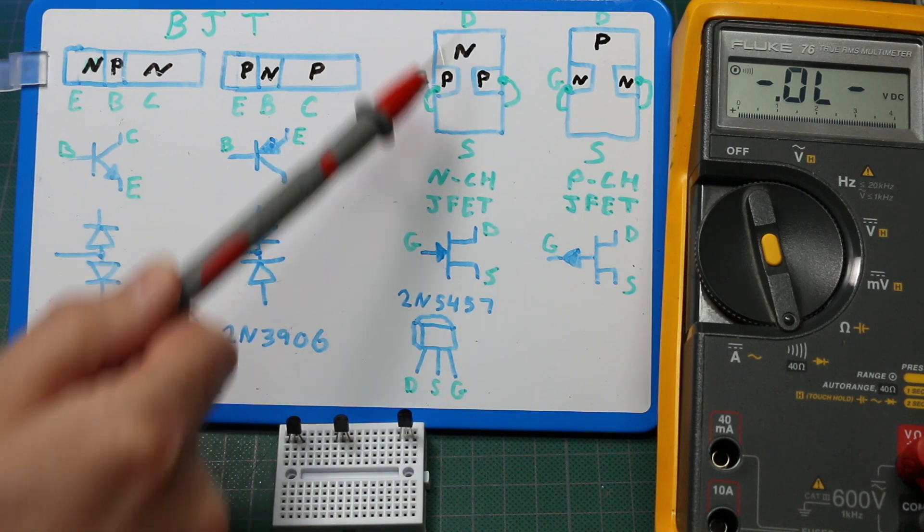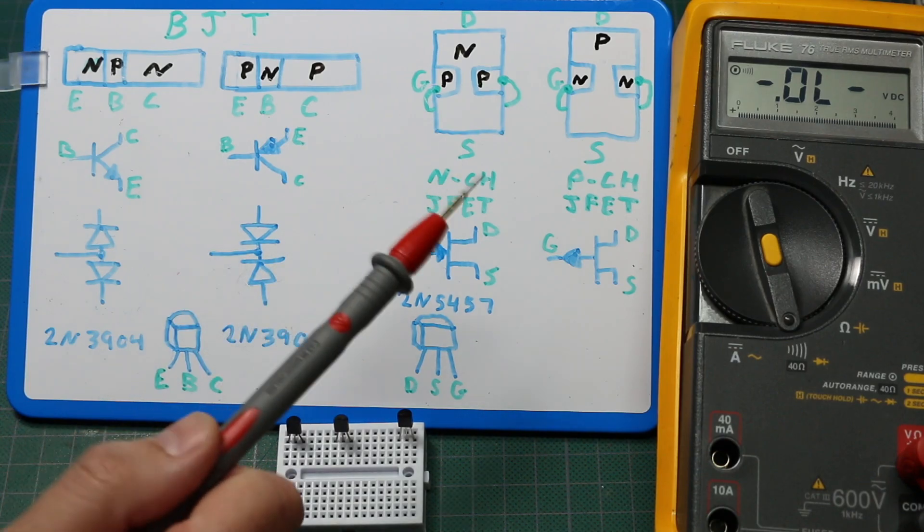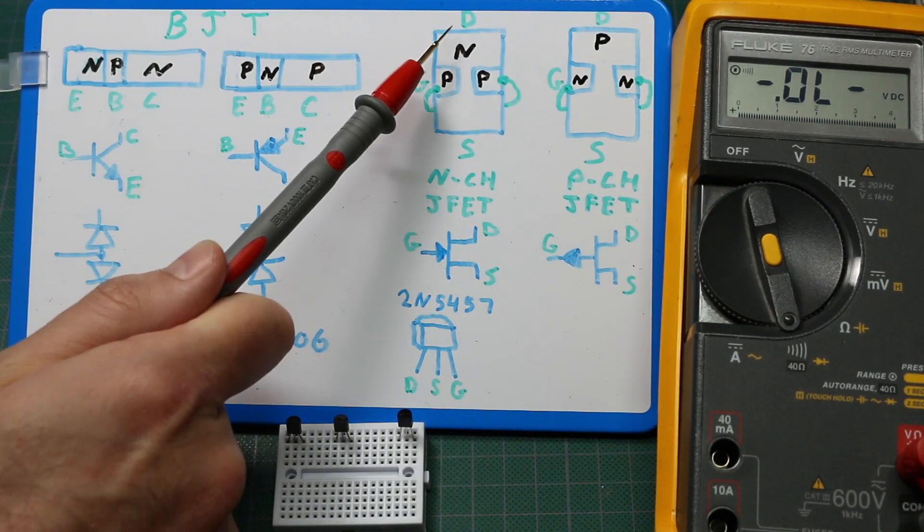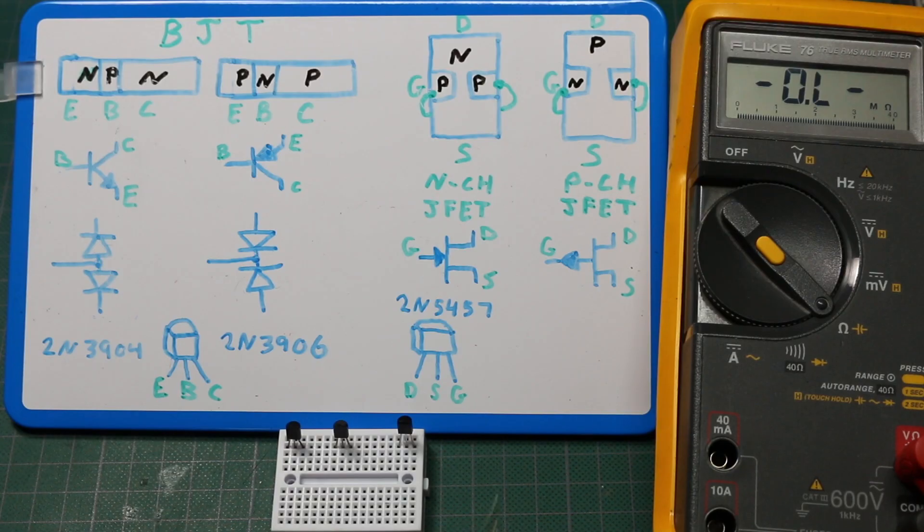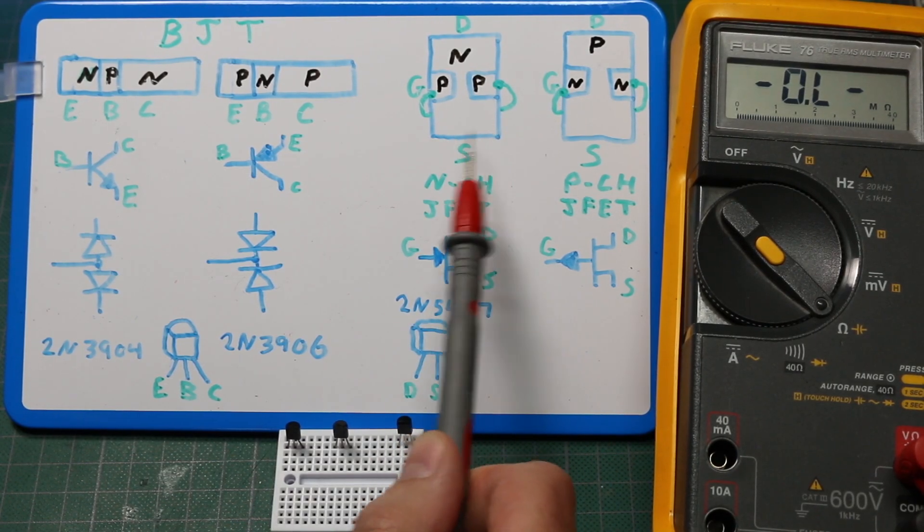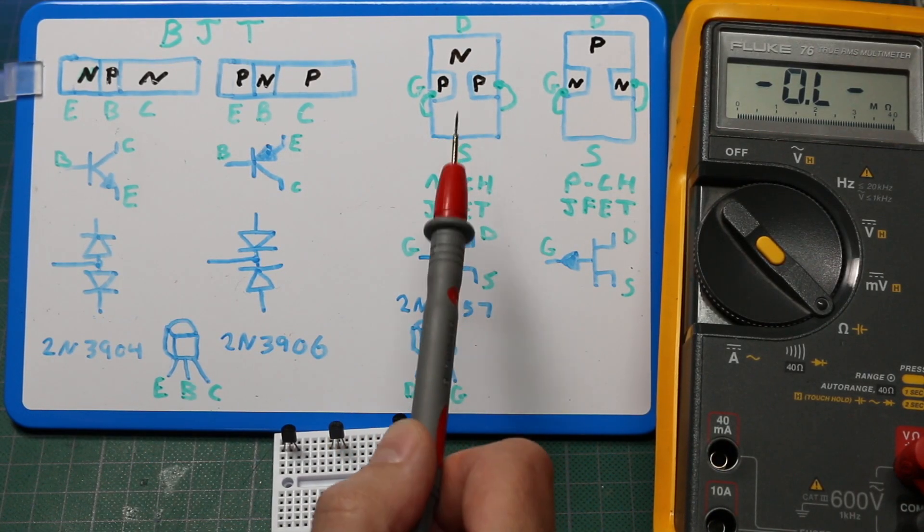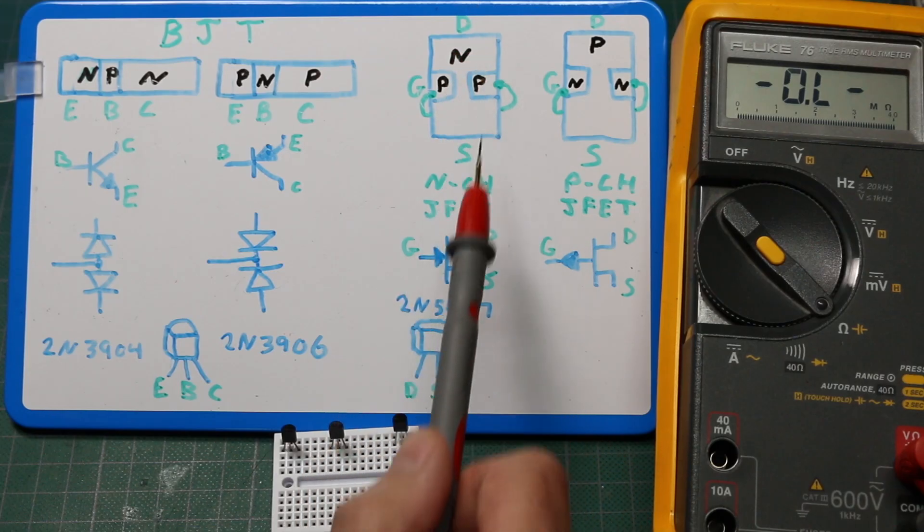Generally those are considered interchangeable on a JFET. Another way that we can test the functionality, we can go into resistance mode and try to measure from drain to source. If this JFET is in good condition, we should be able to measure a maximum of a couple of hundred ohms resistance from drain to source when this FET channel is open.